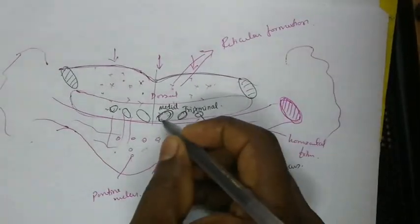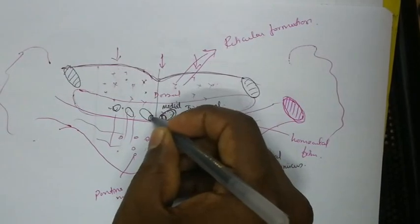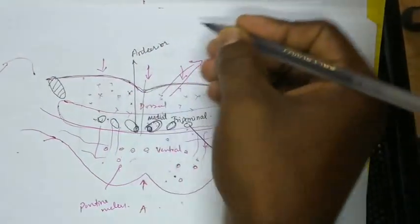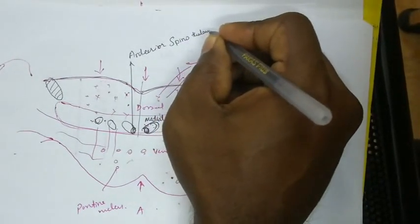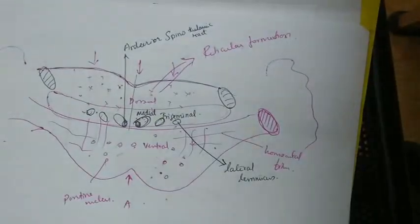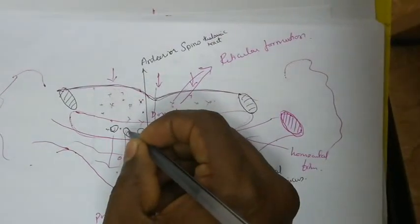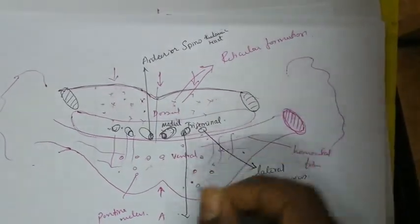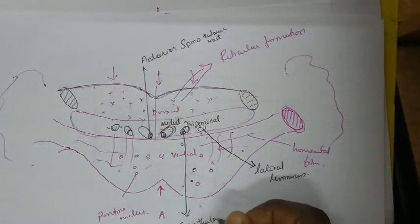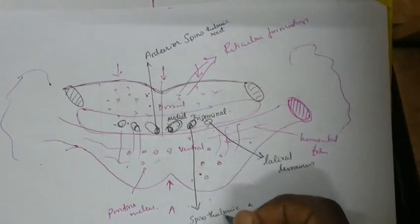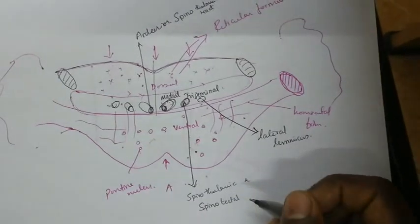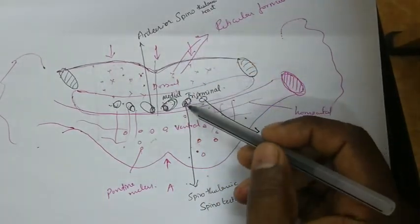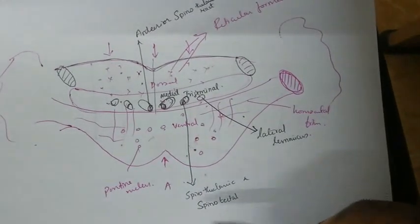Along with the medial lemniscus, the anterior spinothalamic tract also runs. The spinothalamic and the spinotectoral tract run along with the trigeminal lemniscus. So we should remember: along with the medial lemniscus we have the anterior spinothalamic tract, and along with the trigeminal lemniscus we have the spinothalamic and the spinotectoral tract.